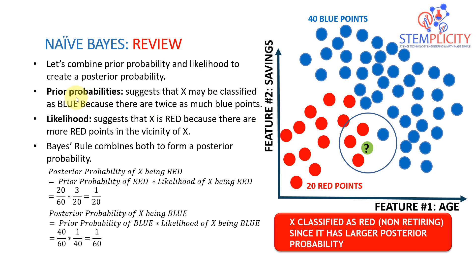What we did was calculate the prior probability, which simply suggests that X may be classified as blue because there are twice as many blue points as red. We have 40 blue points and 20 red points, so we assume the new point will be classified as blue because we have more blue points — and that's what we call the prior probability.